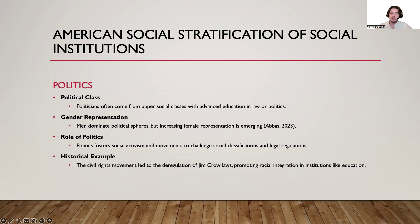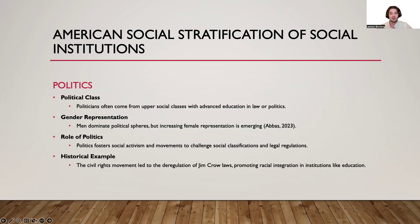Regarding American politics, there are two main areas of focus. First, the individuals who become politicians are usually in an upper-level social class with a higher level of education in law or politics. It is also seen that men are over-represented within political spheres, but this social stratification of gender is slowly changing due to more women becoming major key speakers within political parties. Second, politics focuses on creating social activism and movements to change social classifications and legal regulations, serving as a social institution that can change the very fabric of classes represented. One major example is the civil rights movement of the 1960s and 70s and the deregulation of Jim Crow laws, which allowed racial integration into other social institutions such as the American educational system.